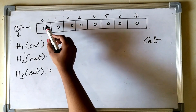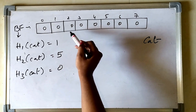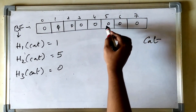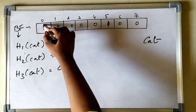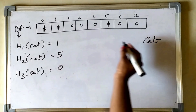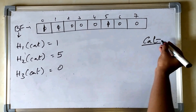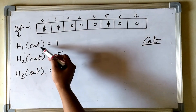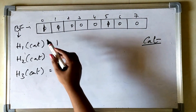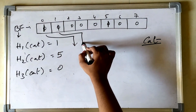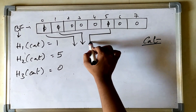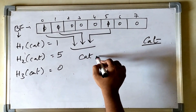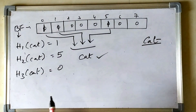We also calculate the hash using the other hash functions, say that is 5 and 0 respectively. Then we toggle the bits at the corresponding indexes: index 1 becomes 1, index 5 becomes 1, and index 0 becomes 1. To look up if 'cat' is present, we again calculate the hashes — 1, 5, and 0 — and check those indexes. If all of them are 1, that means 'cat' is present in our bloom filter.